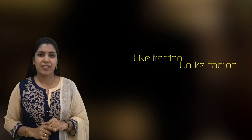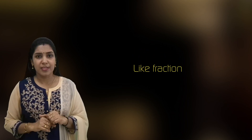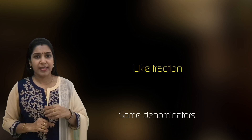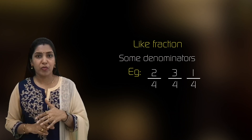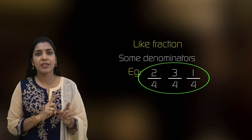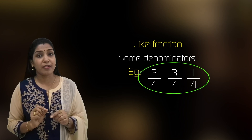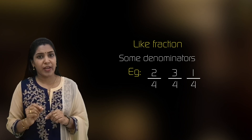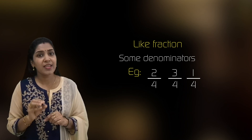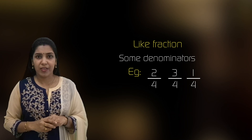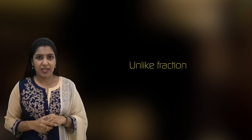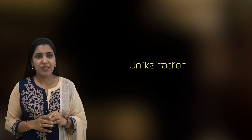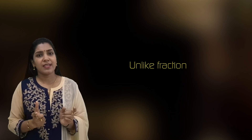Next, we can go to like, unlike, and equivalent fractions. A like fraction is a group of fractions which have the same denominator — for example, 2/4, 3/4, 1/4. In these, you can see all the denominators are 4. The group of fractions which have the same denominator is what we call like fractions.